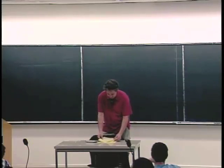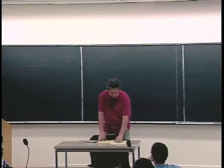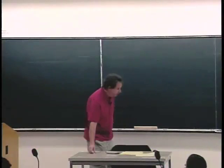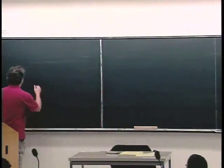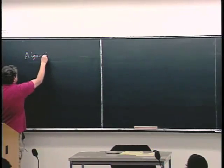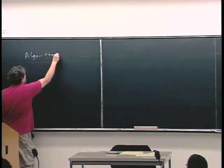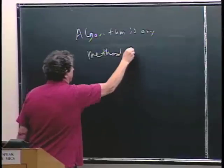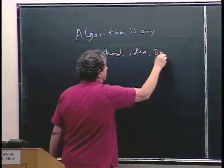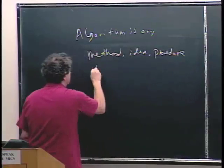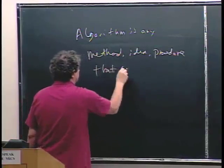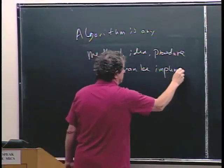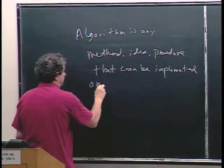Last time I talked about the Church-Turing thesis. This is a formal definition of what an algorithm is — any method or idea or procedure that can be implemented on a Turing machine.